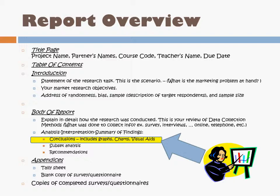When I'm talking about Step 5, you've worked through your report to a certain degree. You've created your title page, table of contents, you've done your introduction — your research purpose, your objectives, how you addressed randomness, bias, sample description of your target respondents, and your sample size. Now you're into the body of your report. You have previously detailed exactly how you gathered your research, conducted that research, and gathered the results. Now you need to draw some conclusions — what are the results telling you?